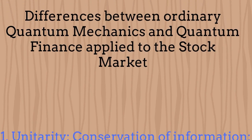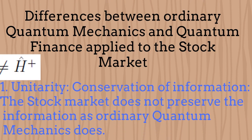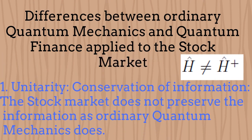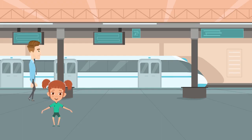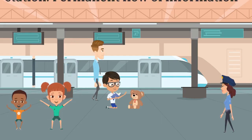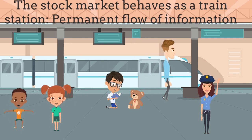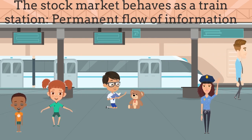Are there differences between ordinary quantum mechanics and the financial market behavior? Certainly yes. The first difference is in the sense of unitarity, or preservation of information. The Hamiltonian in the stock market is not Hermitian. This means that the stock market doesn't preserve information as an ordinary quantum system does.